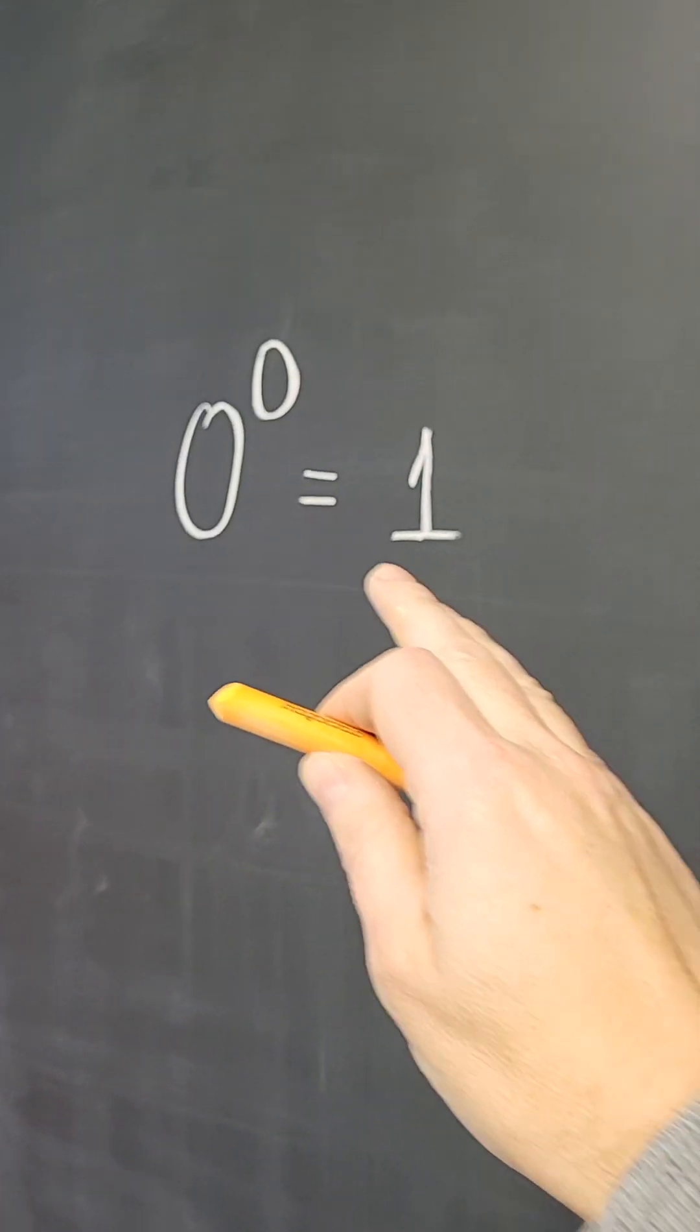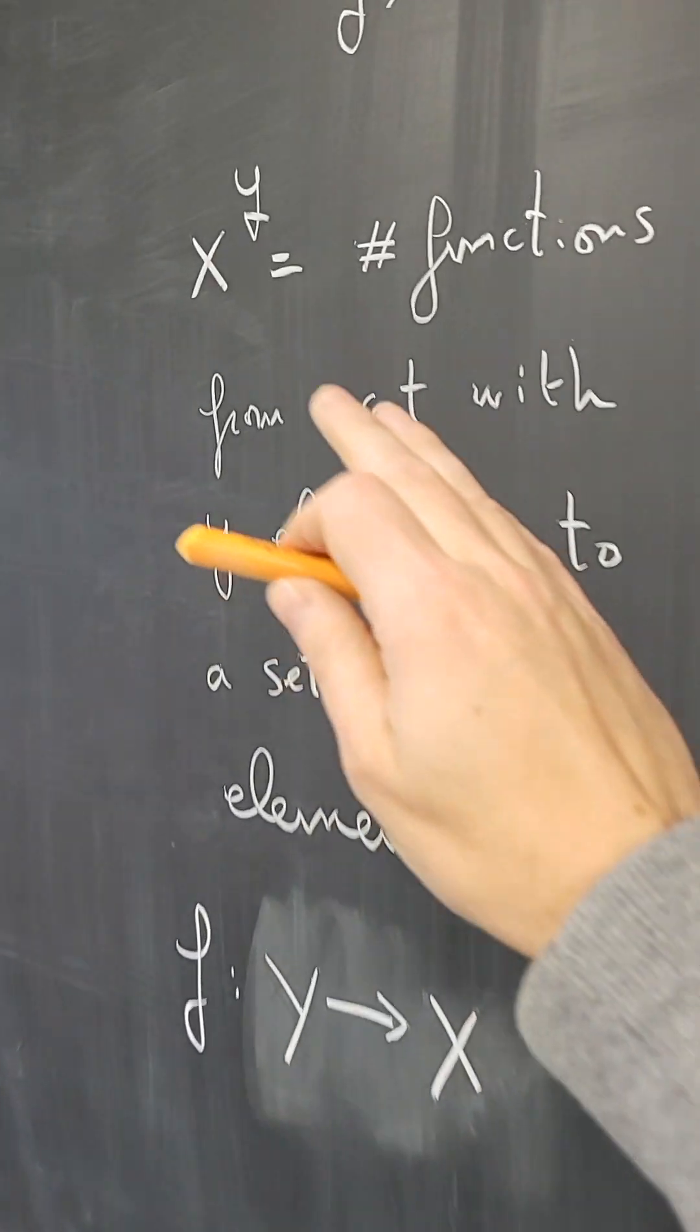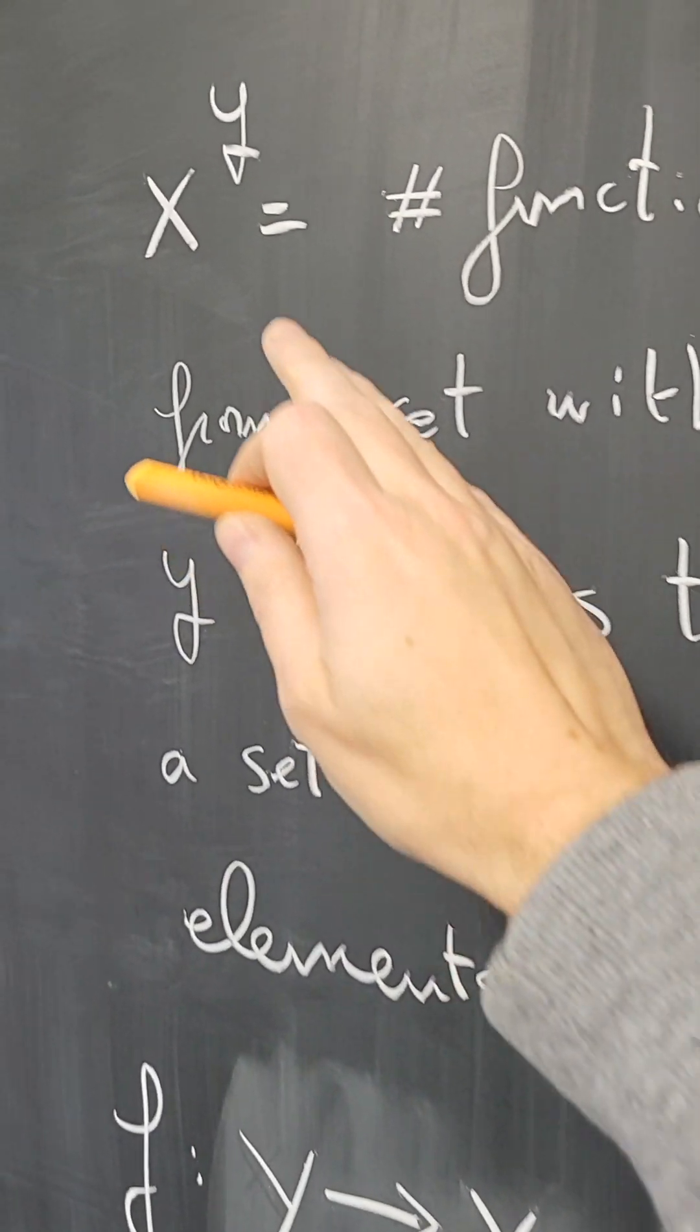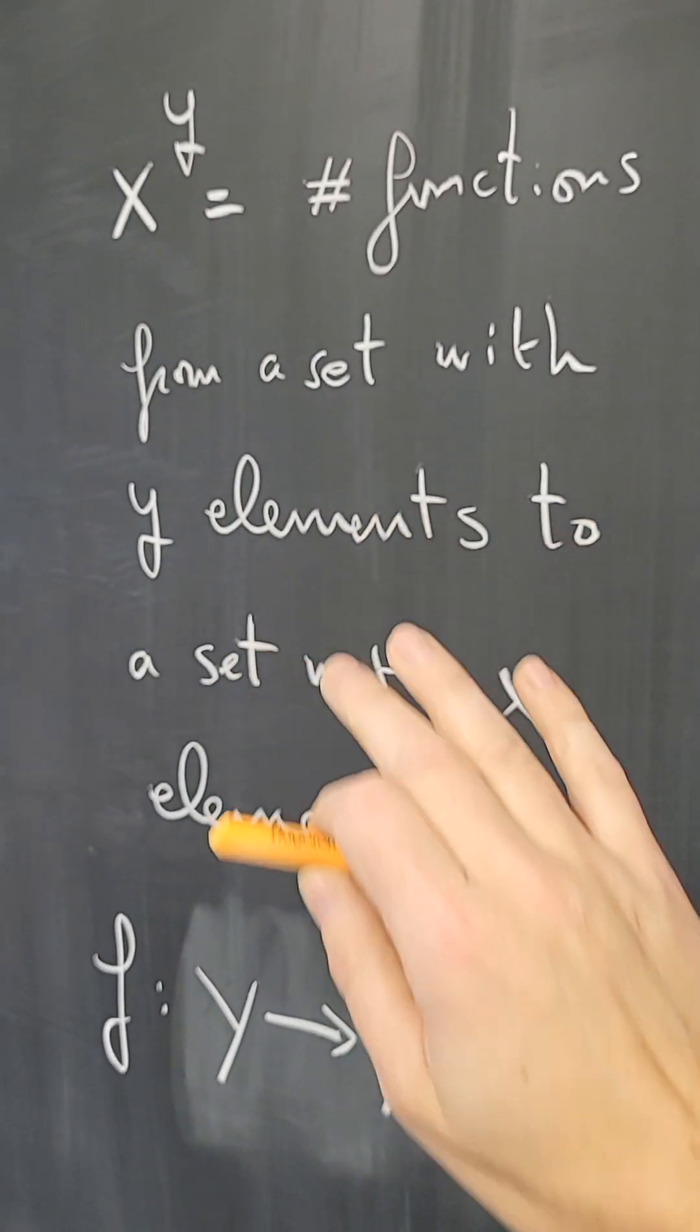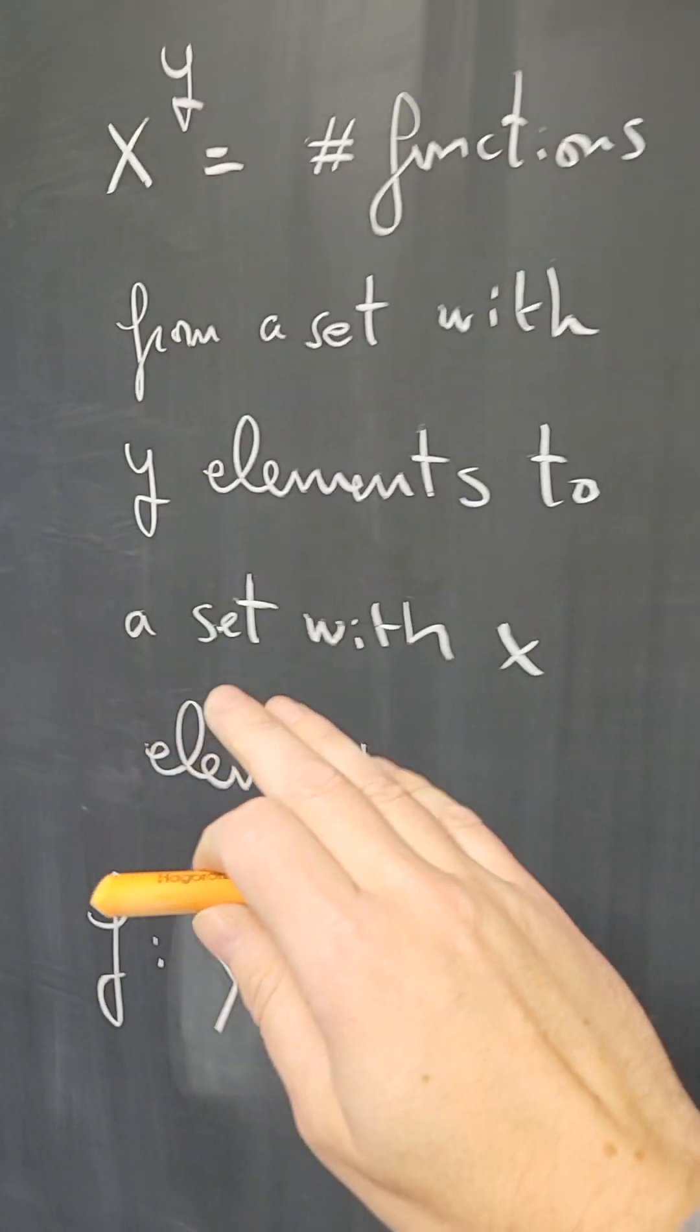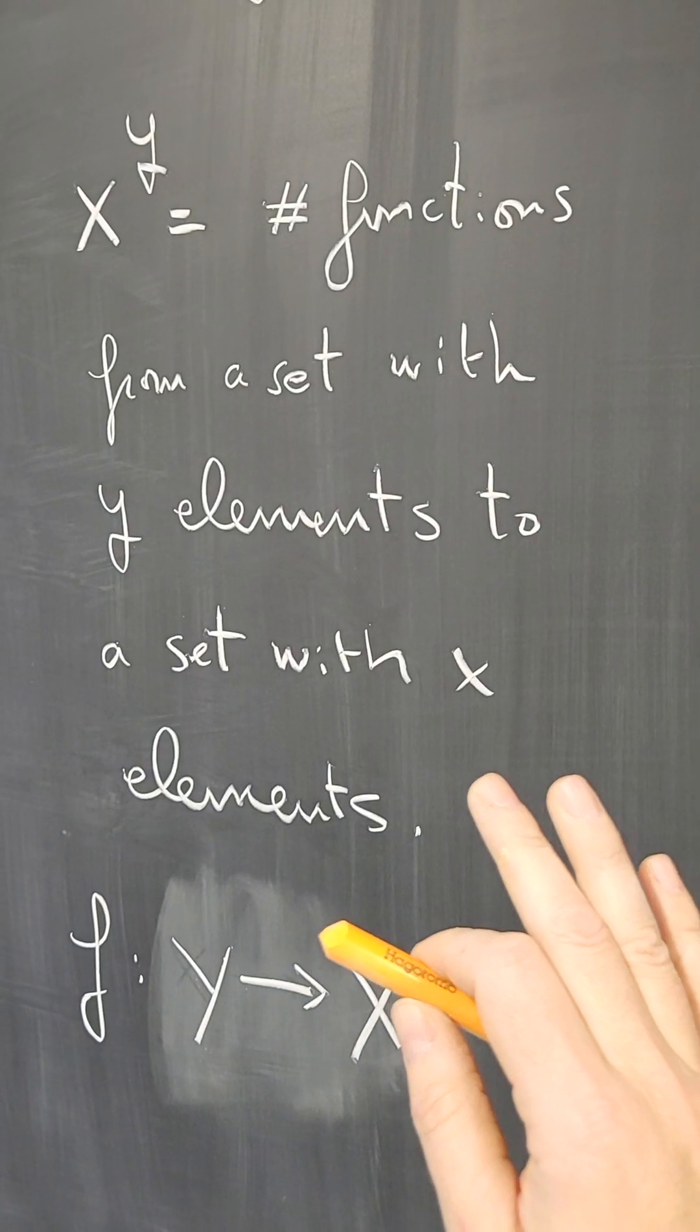So is 0 to the 0 equal to 1? Wait, hold on. First of all, x to the y equals this is a definition. We're defining x to the y in this way, and if we define it in this way, then yes, we agree that 0 to the 0 is 1. But first of all, we have to define x to the y in this very restrictive way.